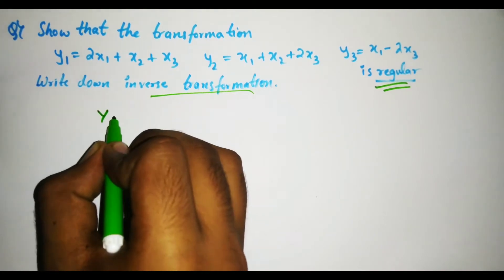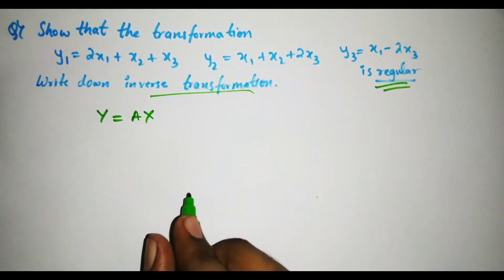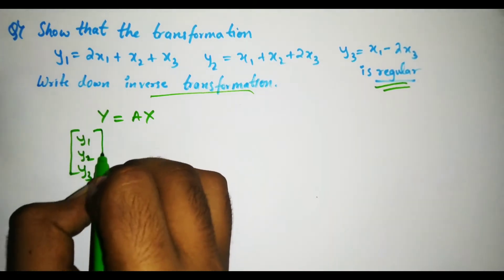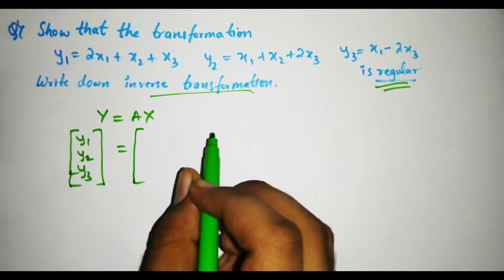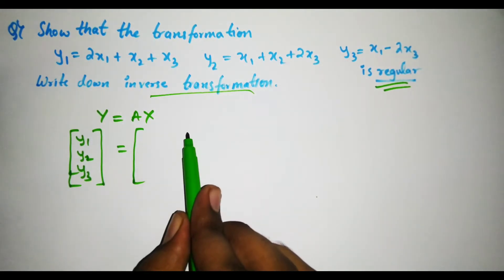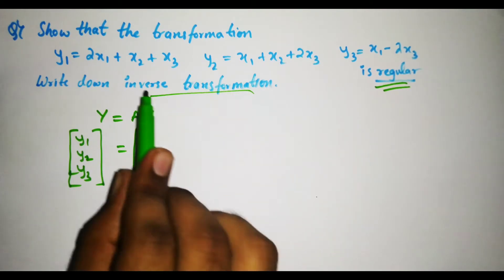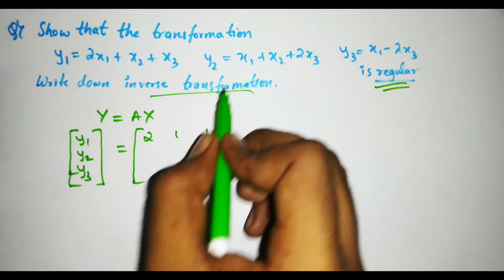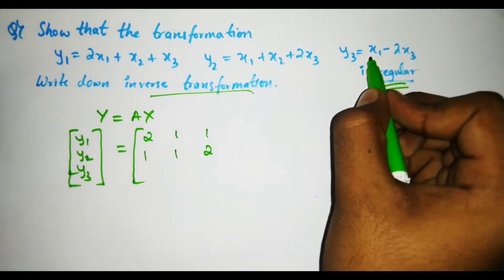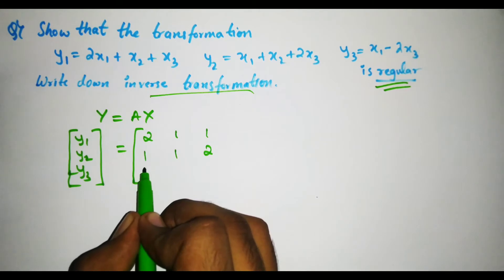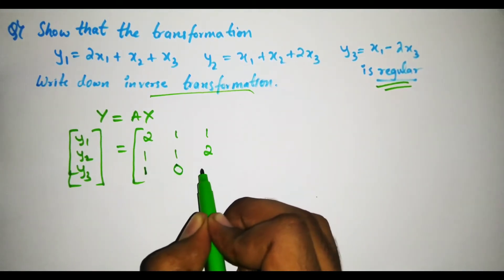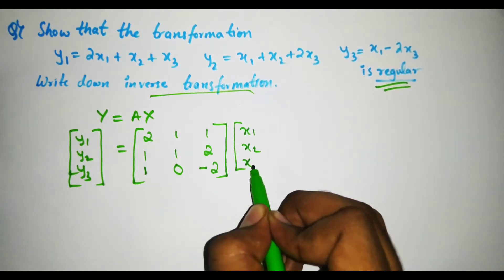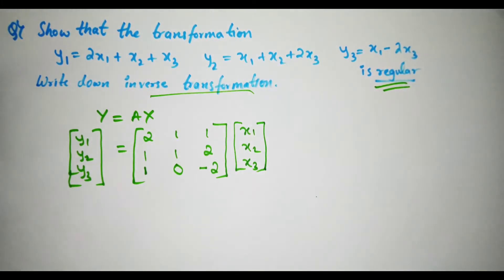First of all, we will write the transformation in matrix form, which is y = Ax. Since we have three dimensions, we have y1, y2, and y3, which is equal to matrix A. We write the coefficients in order: 2, 1, 1 then 1, 1, 2 then 1 here. Since x2 is missing in the last equation, we leave it as 0, giving 0, 1, 0, and minus 2. Then x1, x2, and x3.